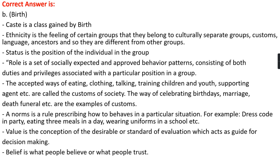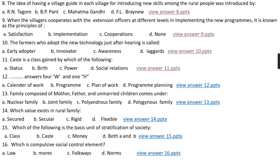Customs include the accepted ways of eating, clothing, talking, and training children, and are called the customs of the society. A norm is a rule prescribing how to behave in a particular situation — for example, dress code at a party, eating three meals a day, wearing uniform in a school. A value is a conception of a desirable standard of evaluation which acts as a guide for decision making, while a belief is what people believe or trust.